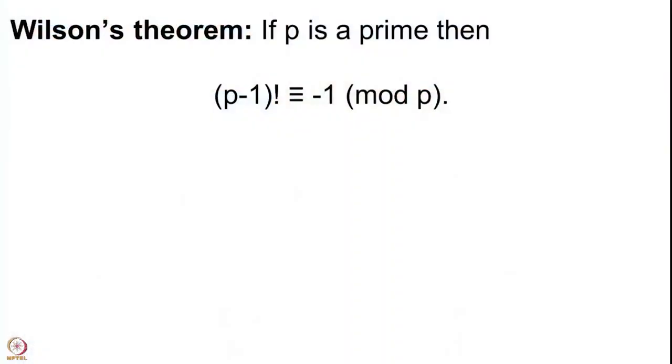The theorem says: take a prime p and consider (p−1)!. That means you take the set Z mod pZ, remove 0, leaving all nonzero elements 1, 2, 3, up to p−1.